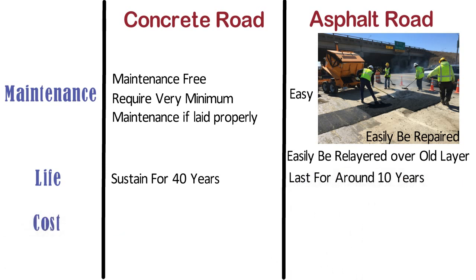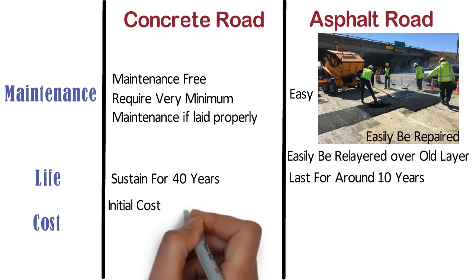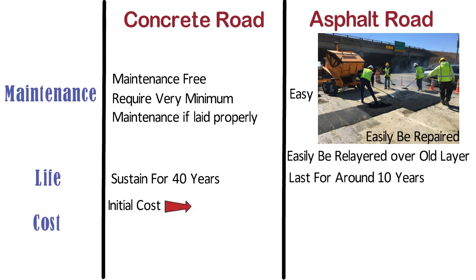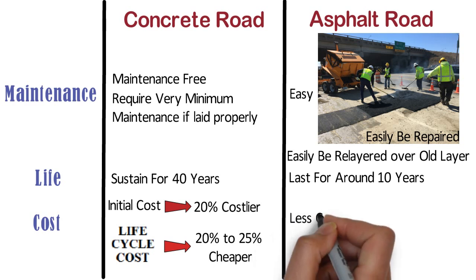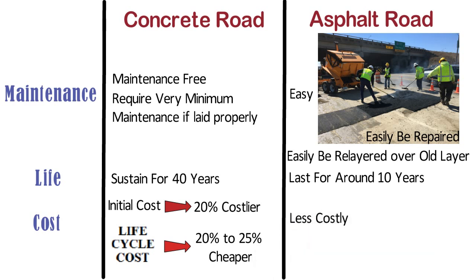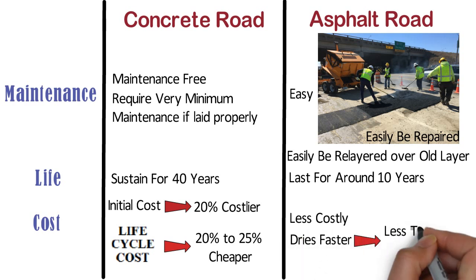Cost. On the basis of initial cost of pavement, concrete roads are reported to be over 20% costlier than asphalt roads. However, on a life cycle cost basis, concrete roads are estimated to be around 20-25% cheaper than asphalt roads. Whereas asphalt is still less costly upfront. Asphalt dries faster, hence it takes less time to build asphalt roads than a concrete road.